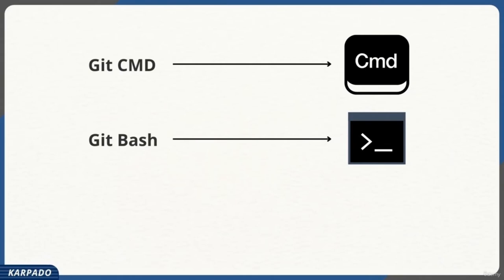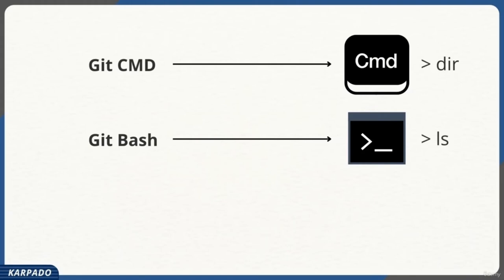Git Bash is handy if you're coming from a Linux background and are used to running Linux commands, but are now working on Windows — you don't need to learn Windows commands. For example, to list all files in a directory, Windows uses 'dir' while Linux uses 'ls.' Git Bash is only meant for Windows; Mac and Linux already come with a Unix shell. If you're new to both, it's better to choose Git Bash over Git CMD — proficiency in Git Bash also helps you work on Linux later.